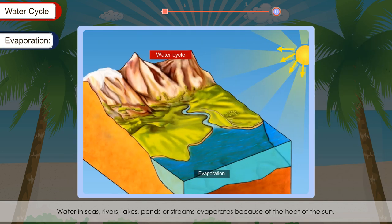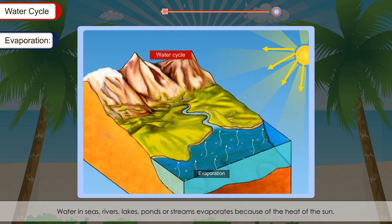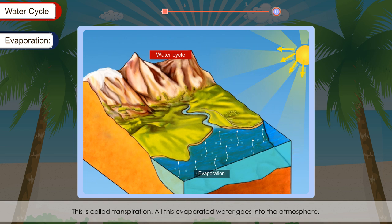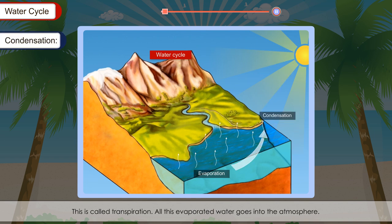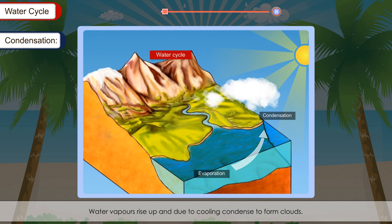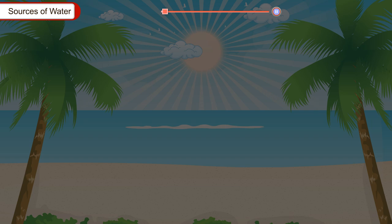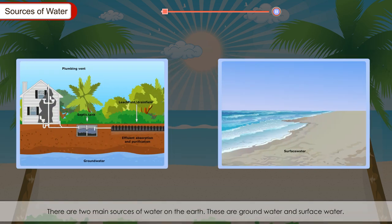The water cycle can be summarised in three steps. First, evaporation: water in seas, rivers, lakes, ponds and streams evaporates due to the heat of the sun, and plants also give out water through their leaves in a process called transpiration. Second, condensation: water vapour rises and cools to form clouds. Third, precipitation: water stored in clouds reaches the ground in the form of rain, hail or snow.